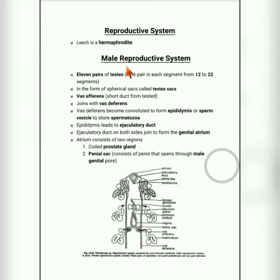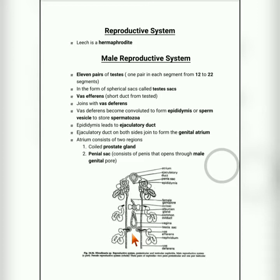In the male reproductive system, totally 11 pairs of testes are present — that is 22 testes in all. One pair is found in each segment from the 12th to the 22nd segment, making 11 pairs of testes total.